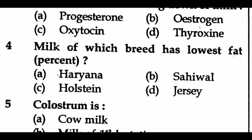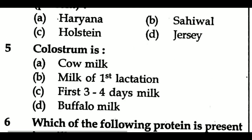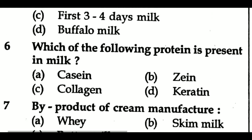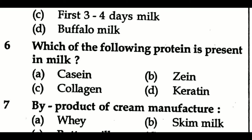Question 4: Milk of which breed has the lowest fat percent? Option A: Haryana, Option B: Sahiwal, Option C: Holstein, Option D: Jersey. Question 5: Cholesterol is found in — Option A: cow milk, Option B: milk of fast lactation, Option C: first 3 to 4 days milk, Option D: buffalo milk. Question 6: Which of the following protein is present in milk? Option A: casein, Option B: gene, Option C: collagen, Option D: keratin.